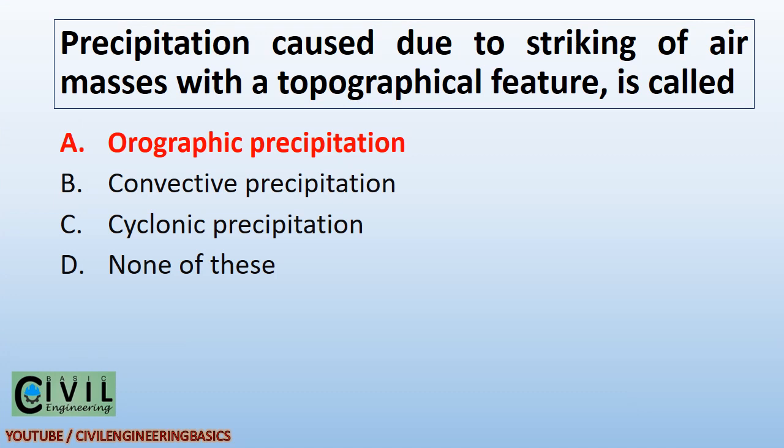Precipitation caused due to striking of air masses with a topographical feature is called orographic precipitation.